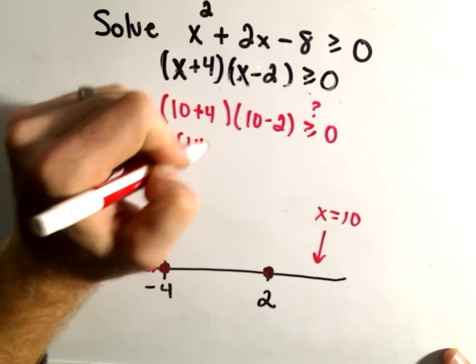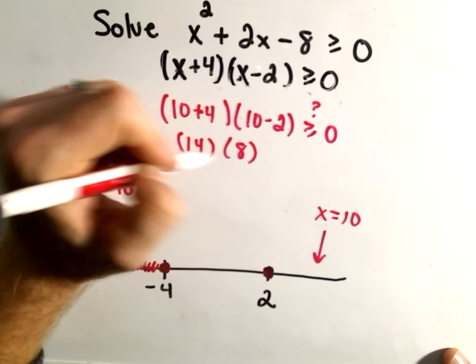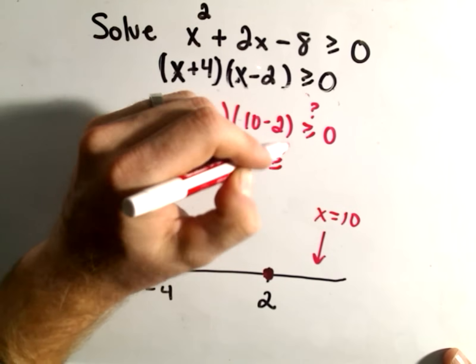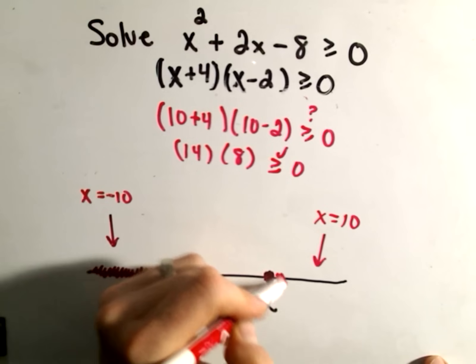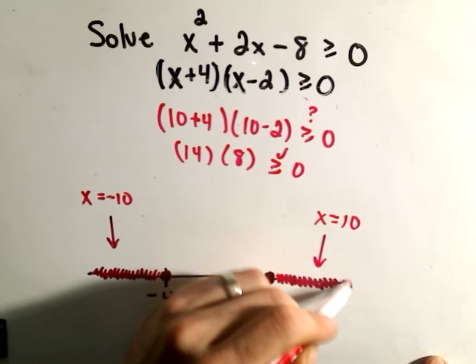Well, I'll get 14 in the first part. I'll get 8 in the second part. Again, these are both positive. So certainly this is going to be greater than or equal to 0. So that means stuff bigger than 2 also works.